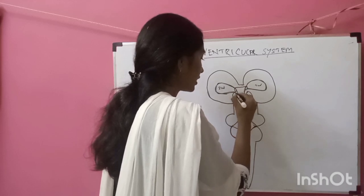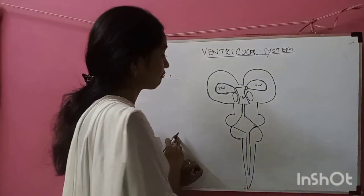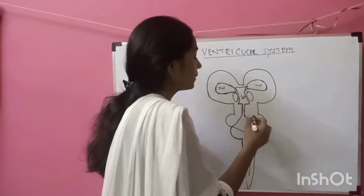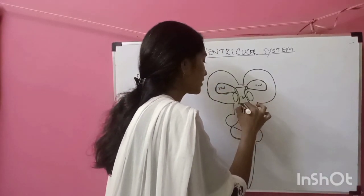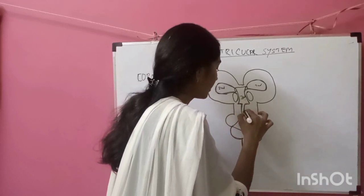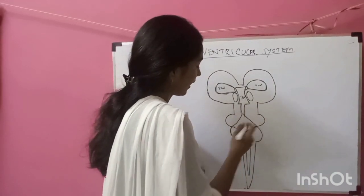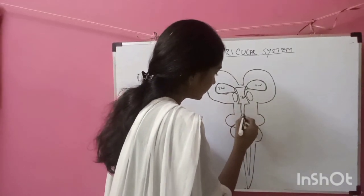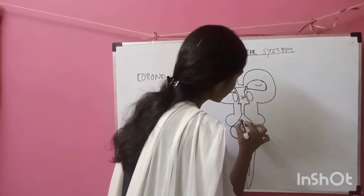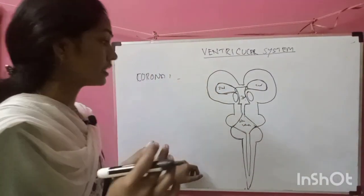The thalamus, hypothalamus, and the third ventricle are all components of the diencephalon. In the midbrain there is a tube-like extension called the cerebral aqueduct. Below that is the fourth ventricle, and finally our central canal.